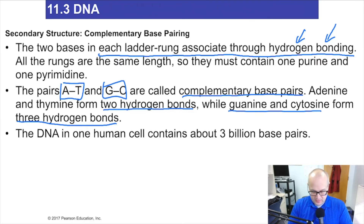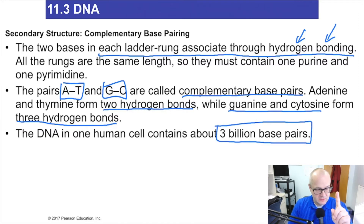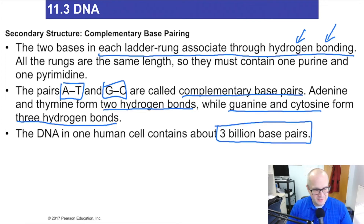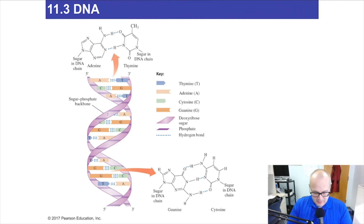Here's a key fact: there are three billion base pairs in one human cell. Just one cell — three billion base pairs. Think about how many cells are in just one centimeter of your skin, each with three billion base pairs.